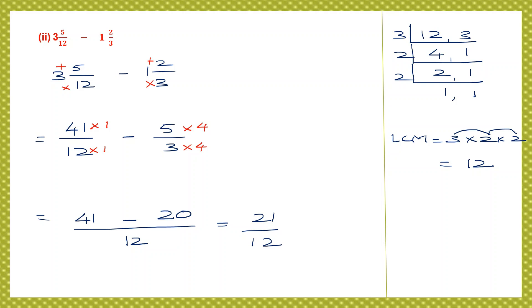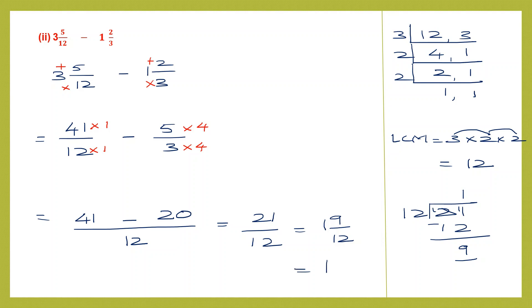21 by 12 is an improper fraction. Converting 21 divided by 12: 12 ones are 12, remainder 9. So we get 1 and 9 by 12. Reducing 9 by 12 to lowest terms by dividing both by 3: 3 threes are 9 and 3 fours are 12. Final answer is 1 and 3 by 4.